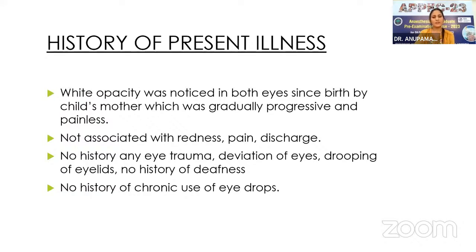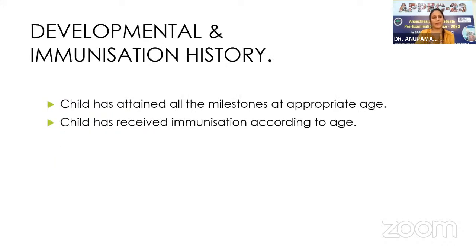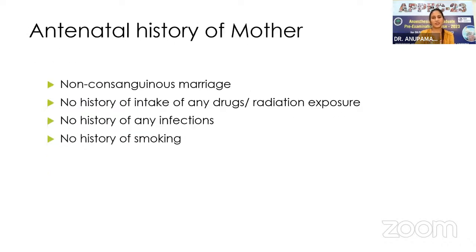There is no associated redness, pain, or discharge, and no history of any eye trauma or chronic use of eye drops. Birth history: the child is the first child of the parents, full-term normal vaginal delivery in hospital with a birth weight of 2.6 kg, cried immediately after birth. No history of meconium staining, delayed cry, apneic spells, or NICU admission. The child has attained all milestones at appropriate age and received immunization according to age.